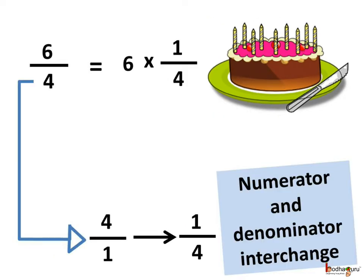So, 6 divided by 4 means 6 multiplied by 1 by 4. How? When we multiply instead of divide, the numerator and the denominator of the divisor exchange places and become the multiplier. Here, the divisor is 4. 4 actually means 4 by 1. So when we multiply instead of dividing, it becomes 1 by 4, and thus we multiply by 1 by 4.